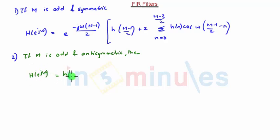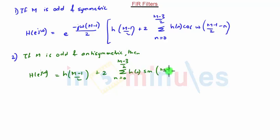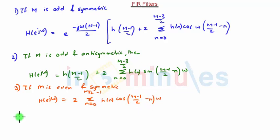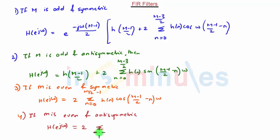For M odd and anti-symmetric, H(e^jω) = h((M-1)/2) + 2·Σ(n=0 to (M-3)/2) h(n)·sin(ω((M-1)/2 - n)). The third condition: if M is even and symmetric, H(e^jω) = 2·Σ(n=0 to M/2-1) h(n)·cos(ω((M-1)/2 - n)). The fourth condition: if M is even and anti-symmetric, H(e^jω) = 2·Σ(n=0 to M/2-1) h(n)·sin(ω((M-1)/2 - n)).